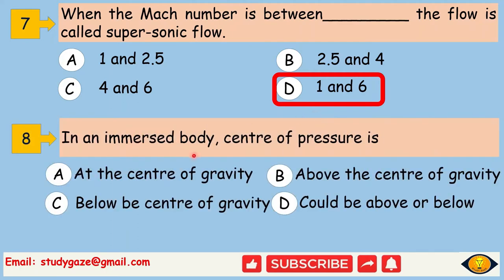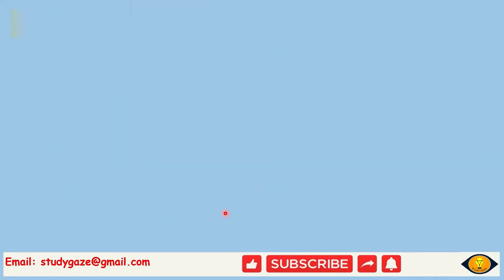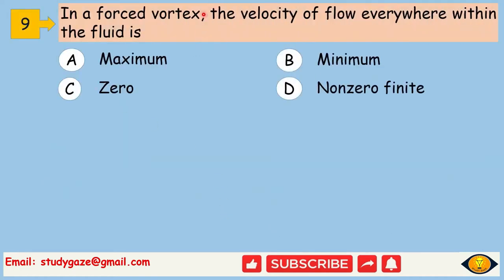In an immersed body, center of pressure is below the center of gravity. In a forced vortex, the velocity of flow everywhere within the fluid is non-zero finite.